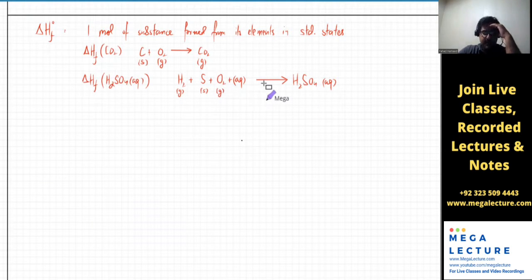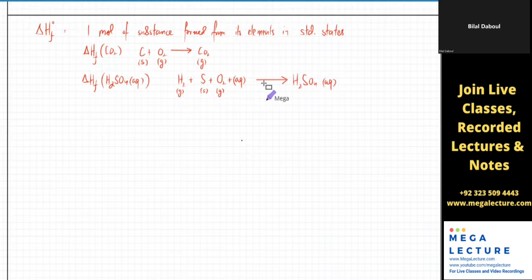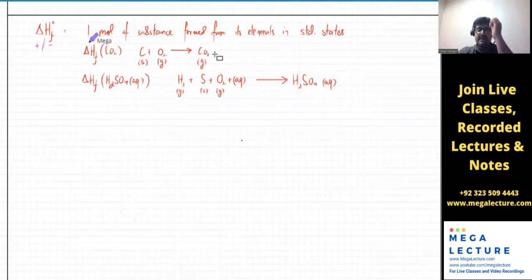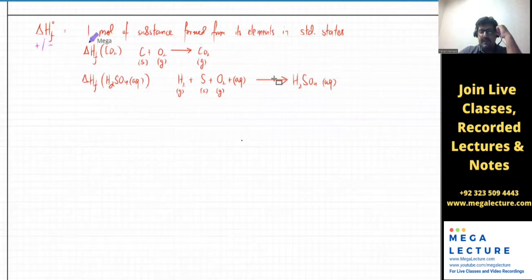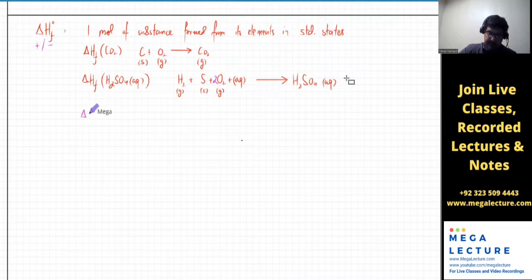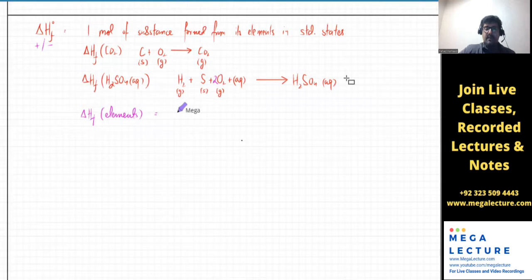Is enthalpy of formation exothermic or endothermic? It could be either, because bond breaking and bond formation both happen. For example, in the case of CO₂, this is actually combustion happening, so it's exothermic. Also remember: enthalpy of formation of elements is always zero, because you don't need to form them.